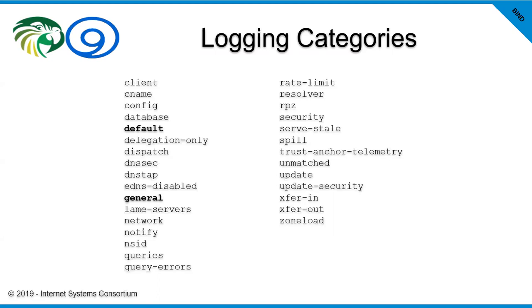With this list of categories you can get very specific, including newer BIND features such as 'servstale,' 'rpz,' and 'trust anchor telemetry' — so you can see queries being done based on trust anchors that are in place. Some categories are really only going to be used by ISC engineers, for example the database category. Be aware that if you don't see something on here that you're not interested in, you don't necessarily need to log it anywhere.